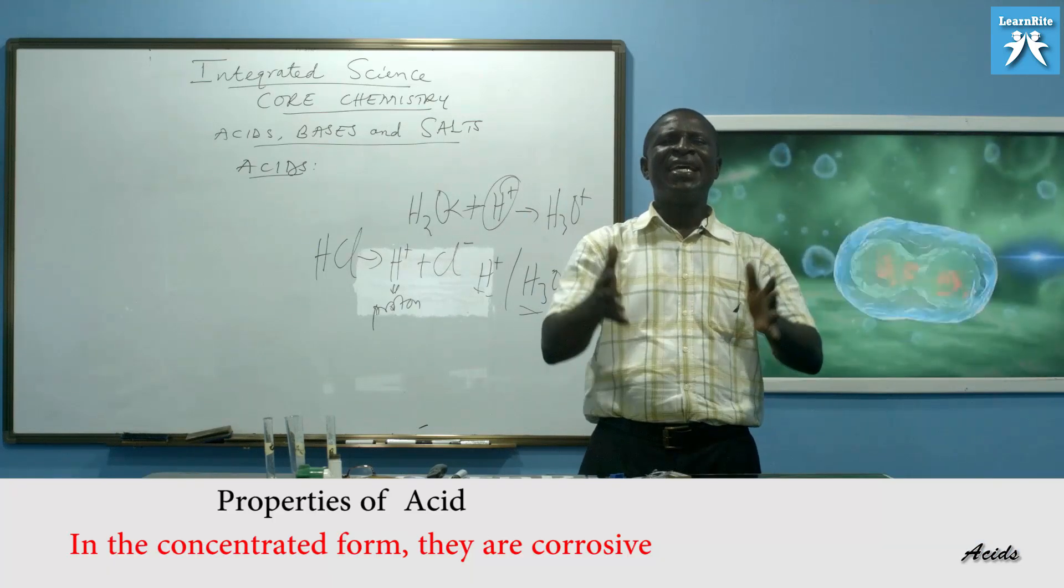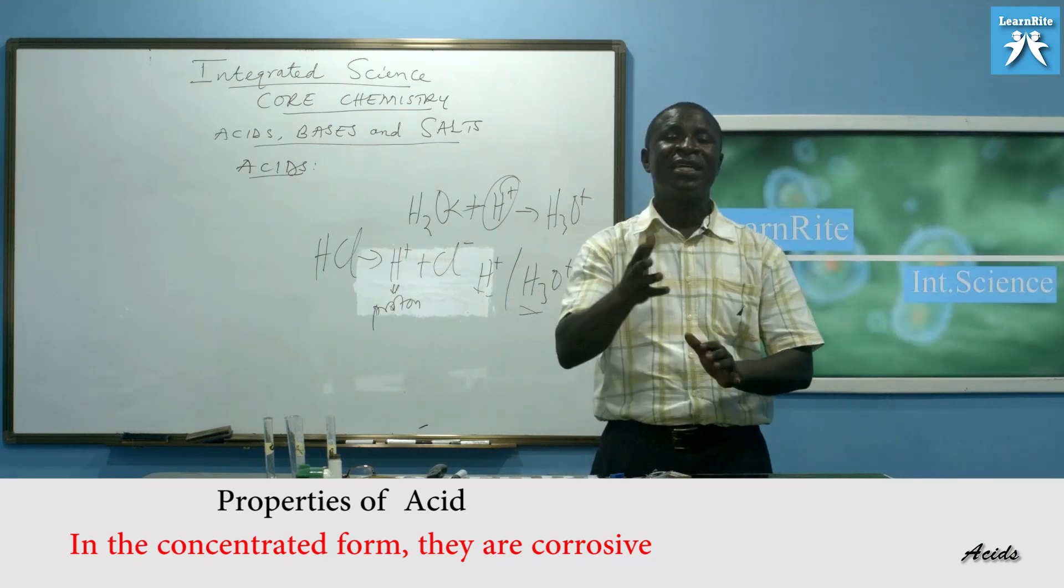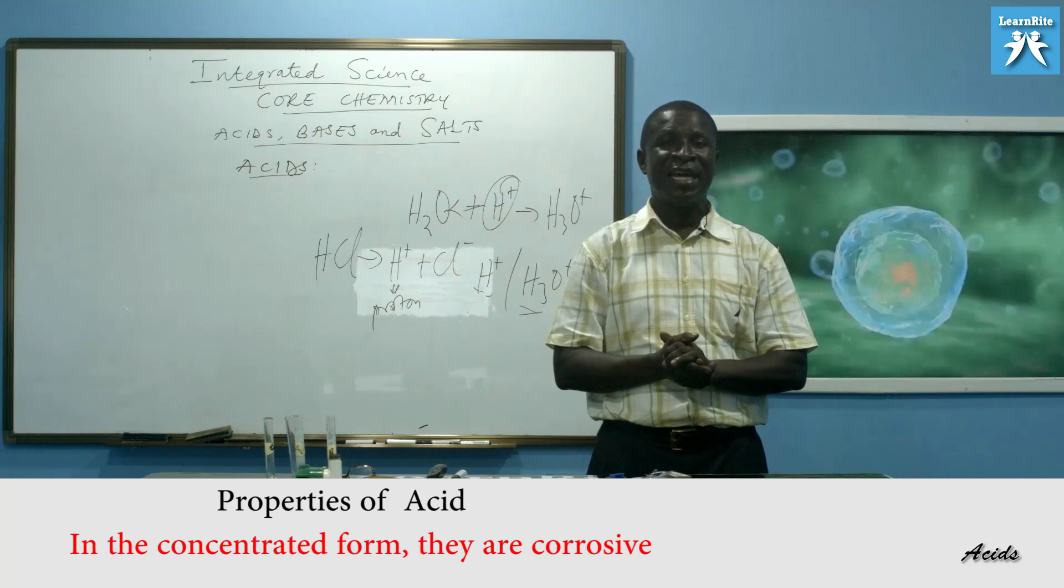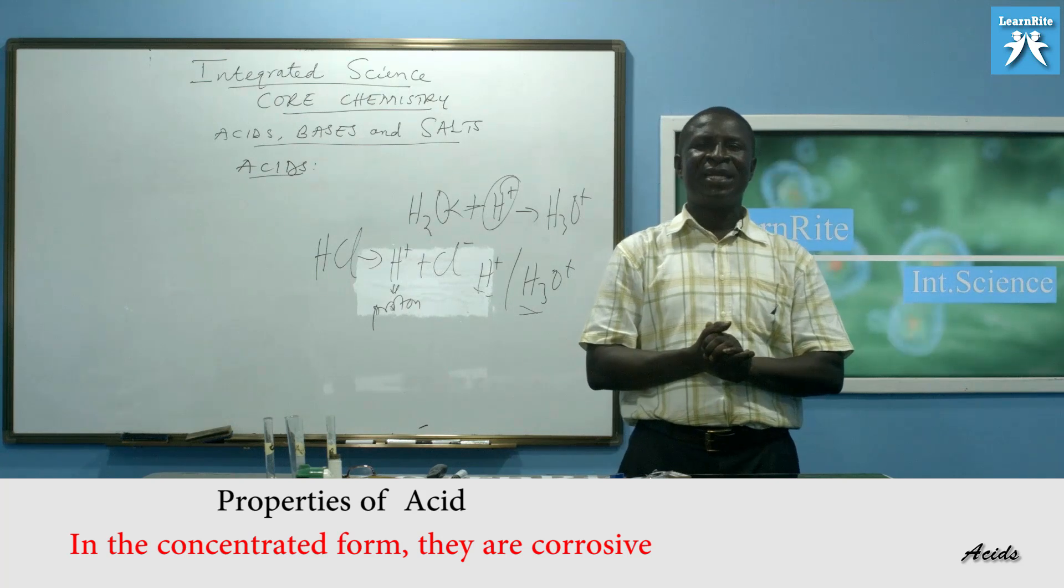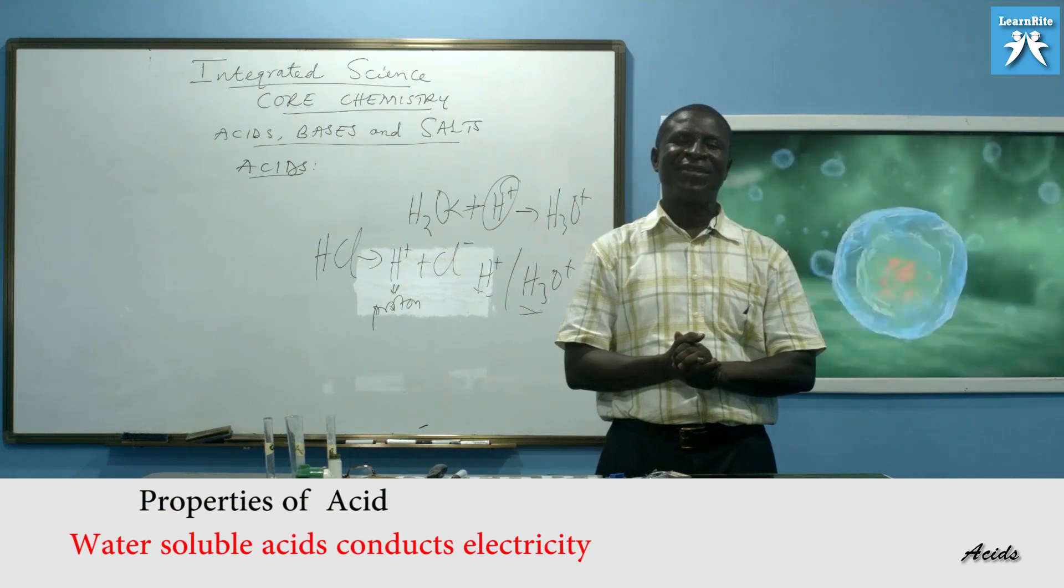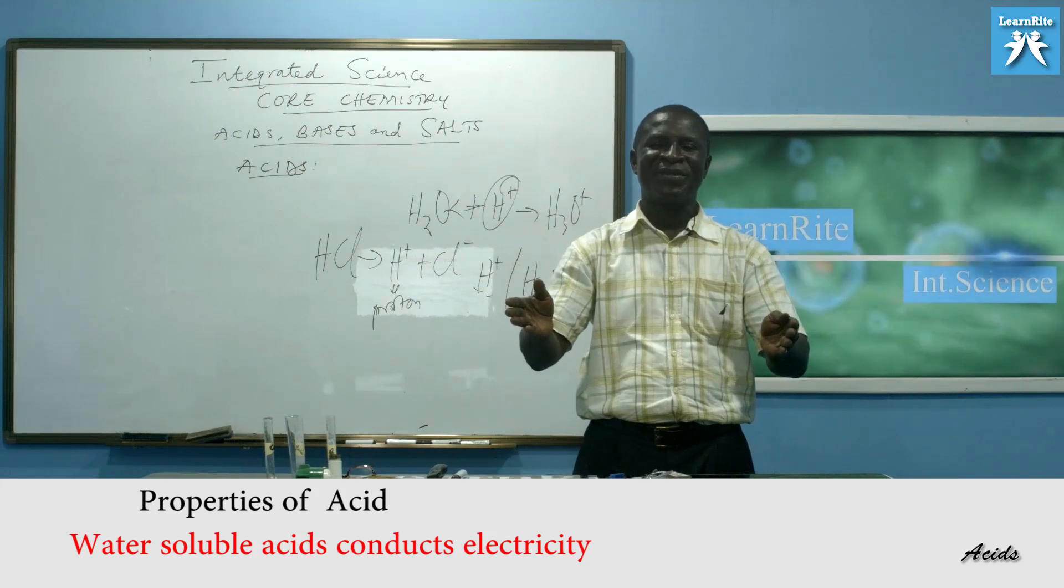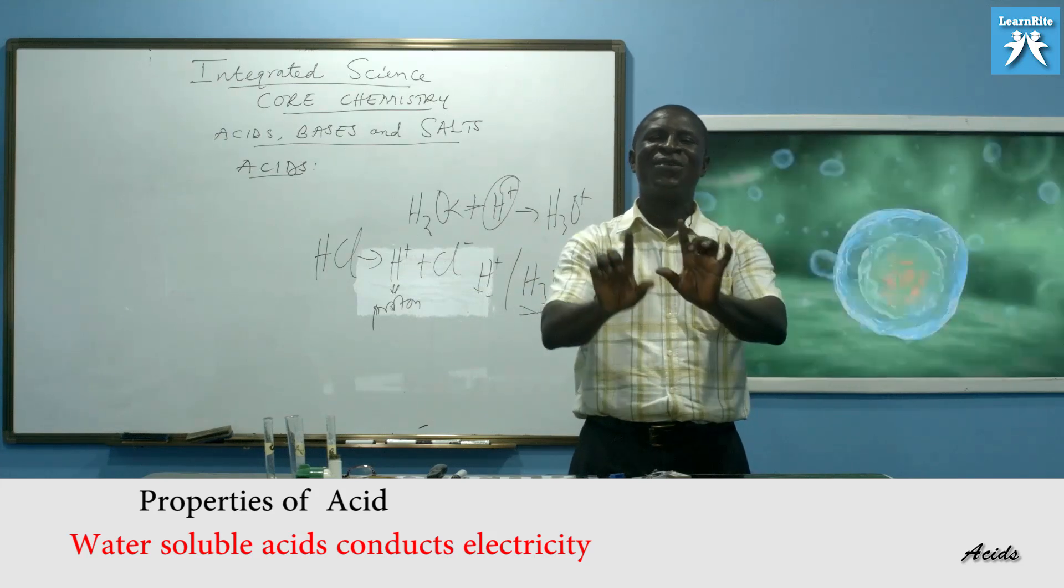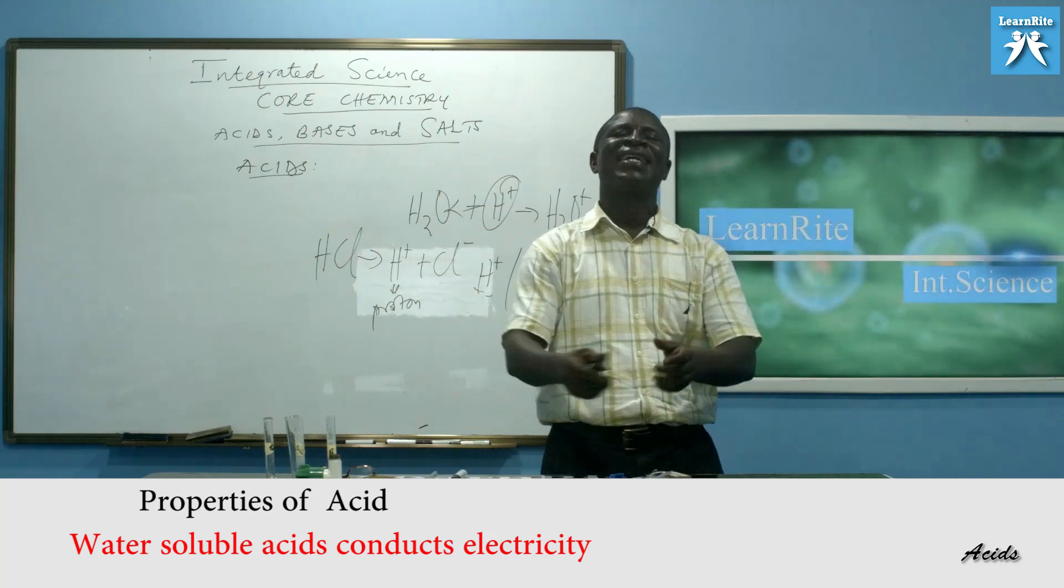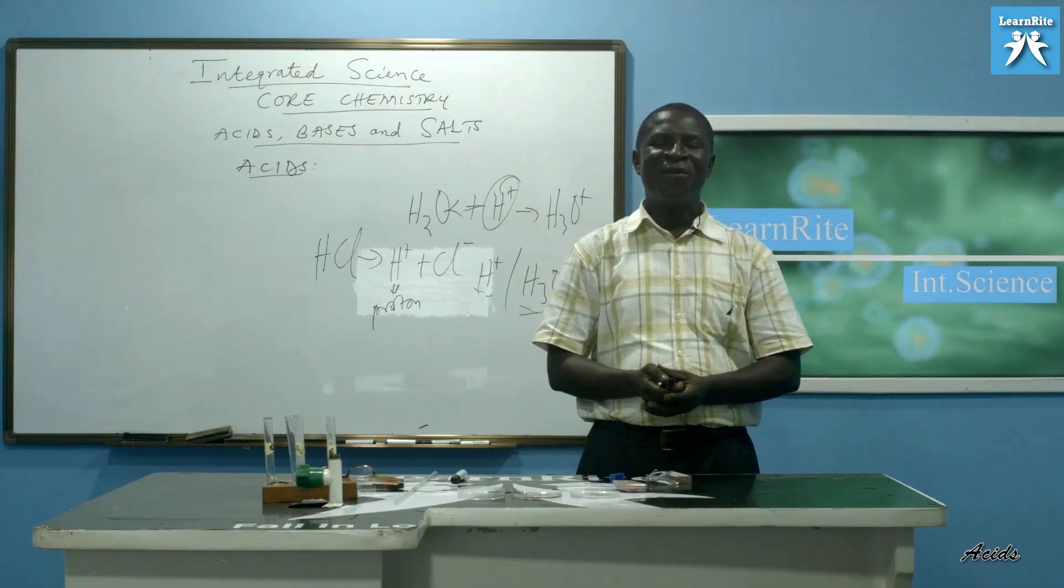Then, number five. In the concentrated forms, they are corrosive. Yes. A concentrated acid is corrosive. As I've already said. Don't joke with it. It will easily end your life. Now, number six, which is the last one. Water-soluble acids conduct electricity. Yes. Because in water, they break down into ions. And the mobile ions can conduct electricity. So, once the acid is soluble in water, it can conduct electricity as we have just read. Please, these are the properties of acids.